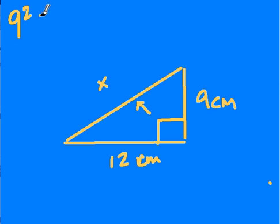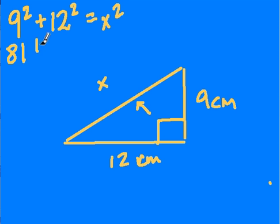So let's use the Pythagorean theorem: 9 squared or a squared plus 12 squared or b squared equals our hypotenuse squared or x squared. 9 squared is 9 times 9 or 81, plus 12 squared which is 12 times 12 or 144, that equals x squared.